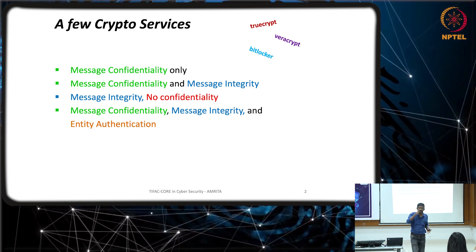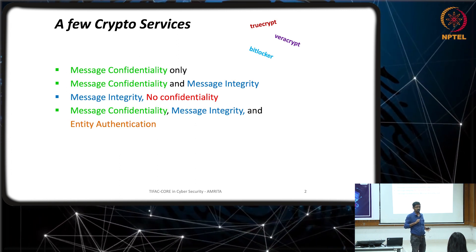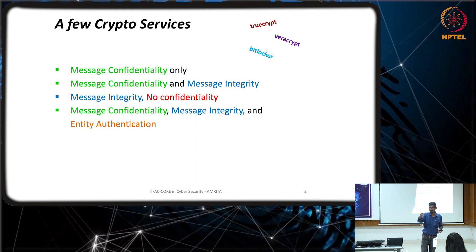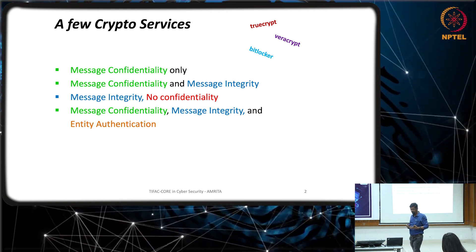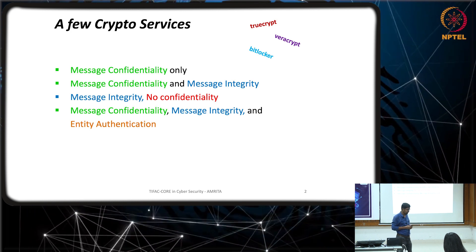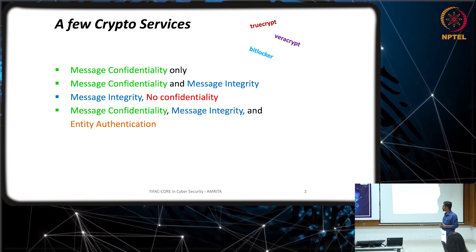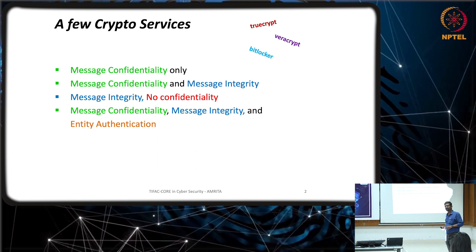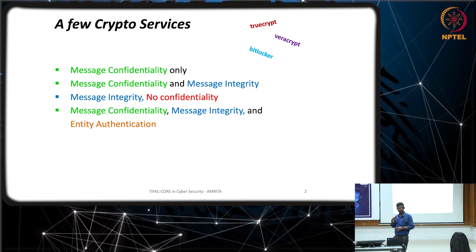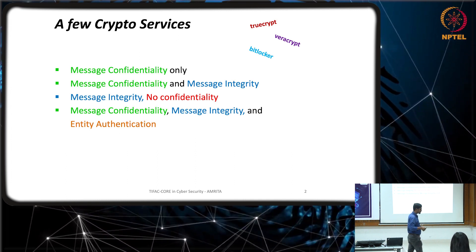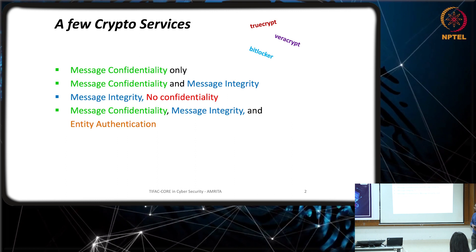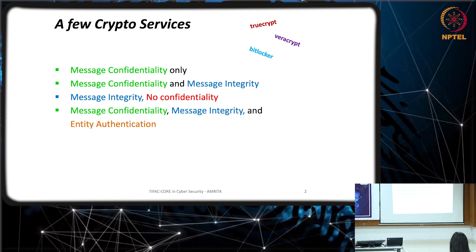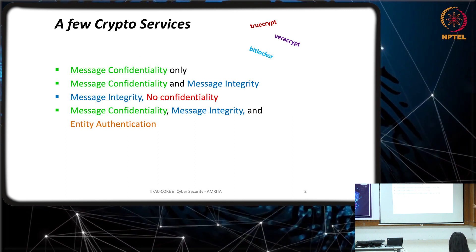It depends on the scenario — in some situations, you don't need to know exactly who in a group sent the message, because any authenticated group member can send it. But in other applications, it is required to know exactly who the person is. For example, is it sbi.com or some other server? The server must authenticate itself to your browser — this happens knowingly or unknowingly. So we have crypto services: message confidentiality, message integrity, message authentication or data authentication, and entity authentication.